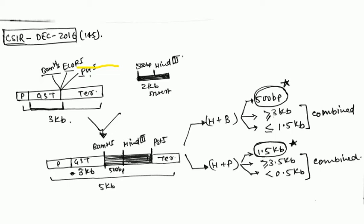As mentioned in the question, there's a 3KB vector with a promoter, GST fusion protein, and termination site. It has three restriction sites: BAMH1, EcoR1, and PST1. The insert is 2KB with a HIN3 restriction site 500 base pairs downstream from the start codon. The insert is ligated at the EcoR1 site.